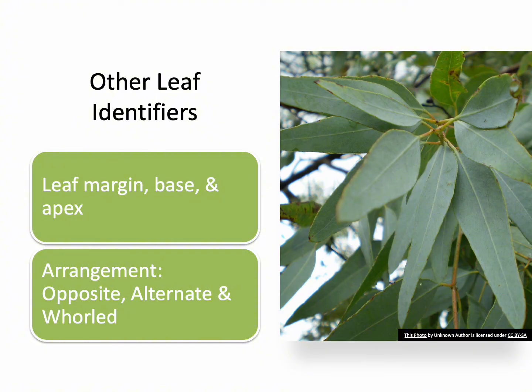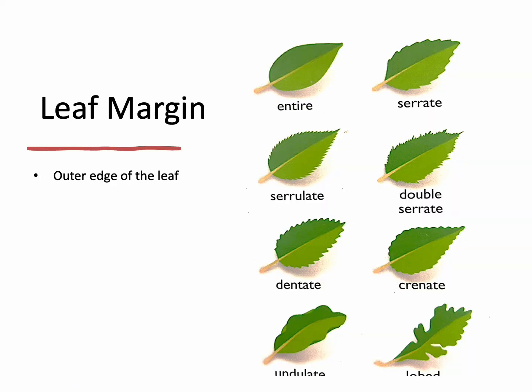Is the margin smooth or serrated? How does the leaf base attach to the stem? Does the leaf tip come to a point or stay rounded? These are all clues to narrowing down the tree species. Here are examples of leaf margins — the outside edge of the leaf. You have entire, which is a smooth leaf, then serrate — like a serrated knife. At the bottom, you have undulate and lobed. Lobed is like white oak. Just learn those — that's all they have in the study guide.